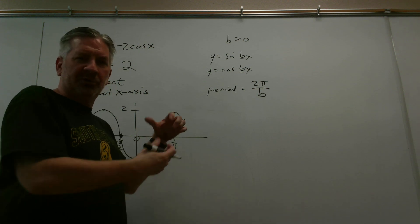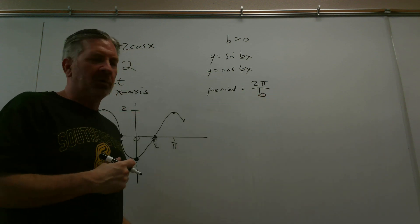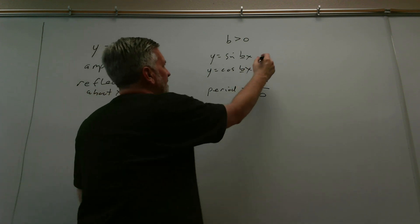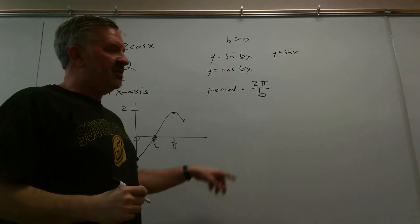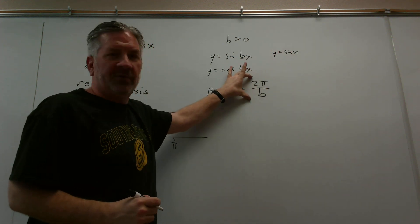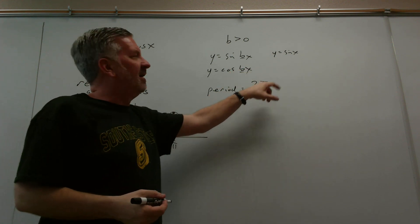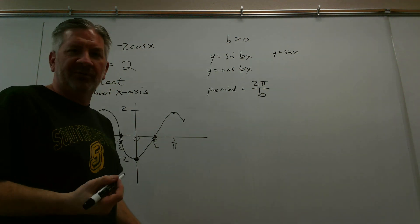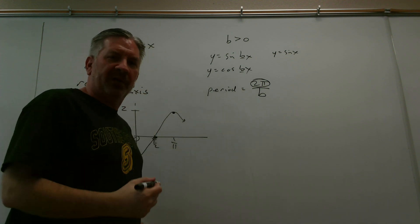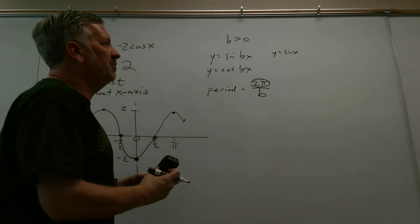Notice: when we change the amplitude, it's a vertical stretch. When we change the period, it's a horizontal stretch or squish. In our original example, if we just have sine x, then b is one. According to the formula, the period would be two pi divided by one, which is two pi — the period of sine x. So the formula works even on the original case. The two pi in the formula comes from the original period of the sine and cosine graph.